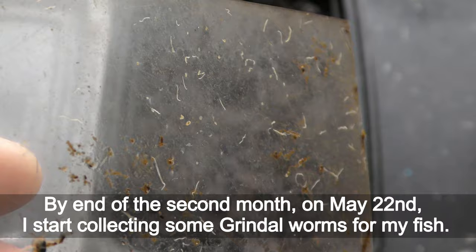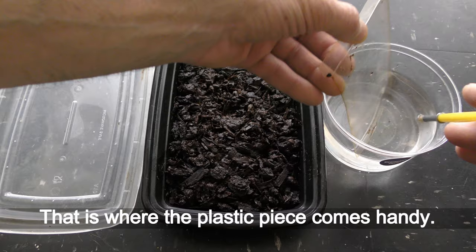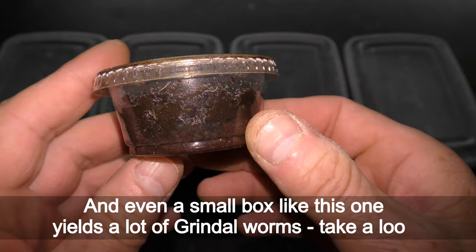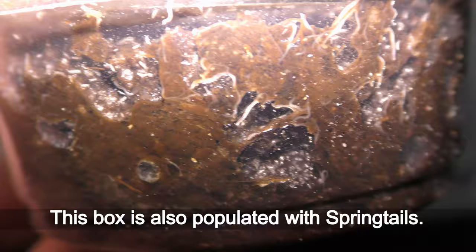By end of the second month on May 22nd, I start collecting some grindal worms for my fish. That is where the plastic piece comes handy. Just wash worms off the plastic piece in a cup or whatever container you may have. And even a small box like this one yields a lot of grindal worms. Take a look.